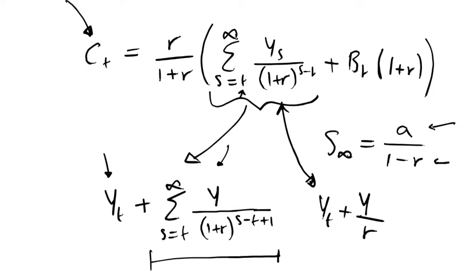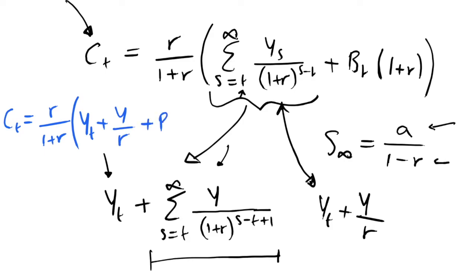Substituting this back into our rearranged budget constraint and eliminating all infinite sums, we arrive at the key result: ct equals r over 1+r, multiplied by the quantity yt plus y/r plus our initial endowment. This is a clean, closed-form expression for consumption in period t, and we can now use it to analyze income shocks.